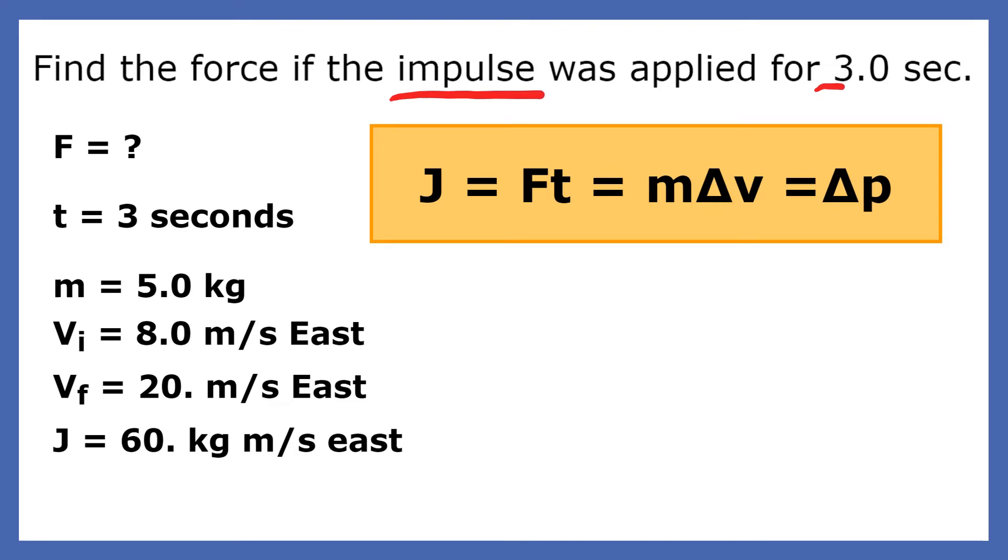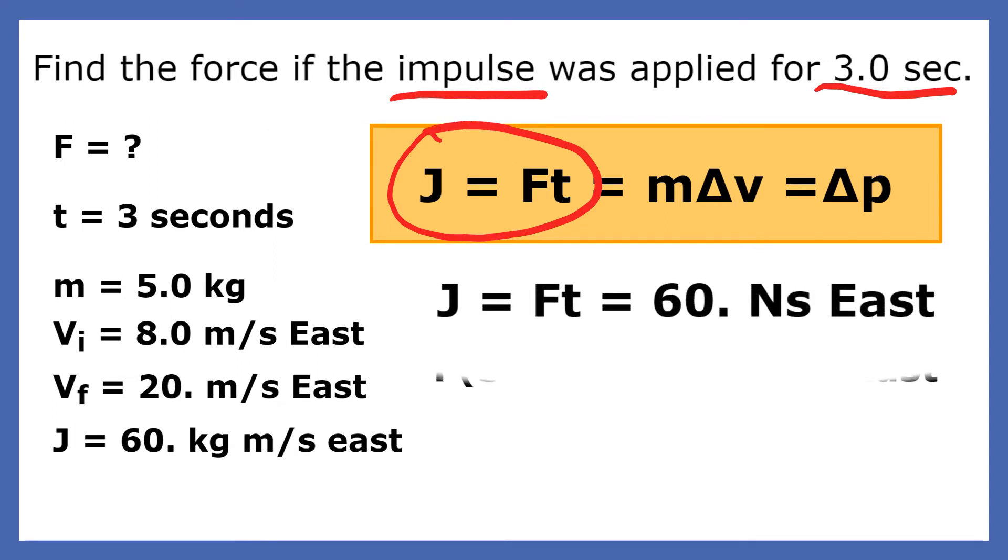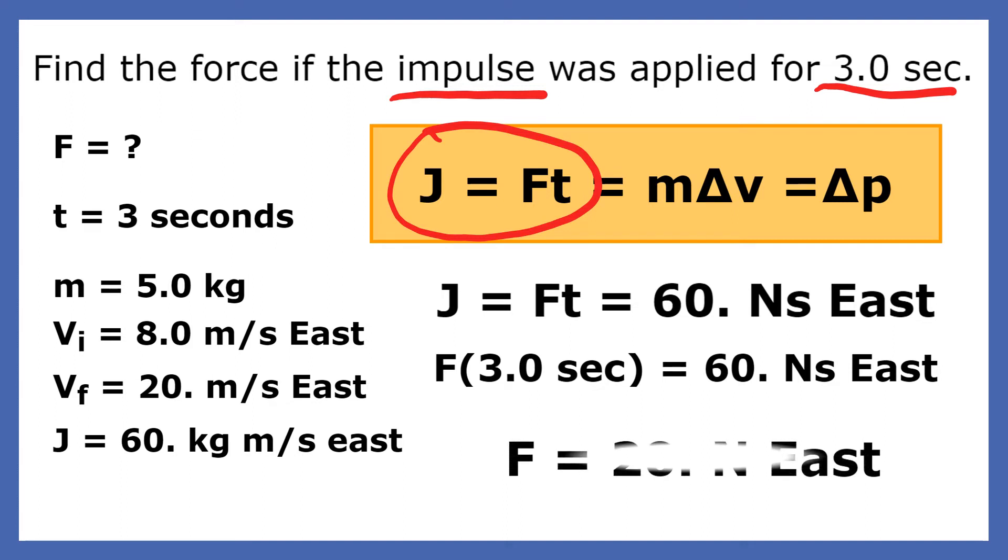Next question. Find the force if the impulse was applied for three seconds. Since J equals Ft and we know that it's applied for three seconds, we substitute 3 for t and we already know the impulse because we found it was 60 newton seconds. Dividing both sides by three, we get 20 newtons east. Notice the force takes on the same direction as the impulse.